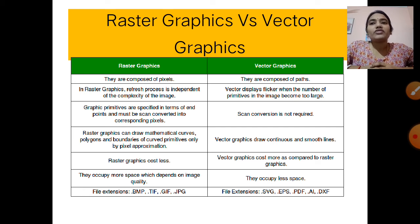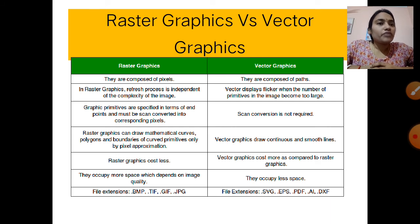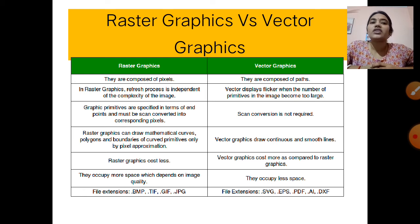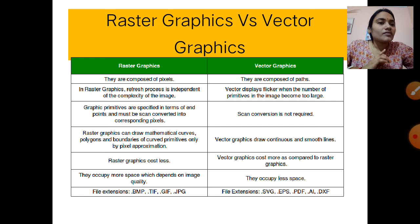File extensions for raster graphics include .bmp, .tif, .gif, .jpg, etc. File extensions for vector graphics include .svg, .eps, .pdf, .ai, and .exf. These extensions will be covered in the next slide.